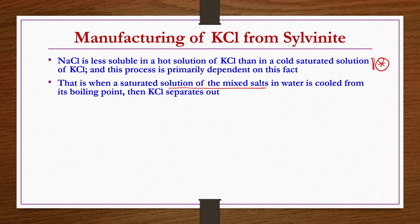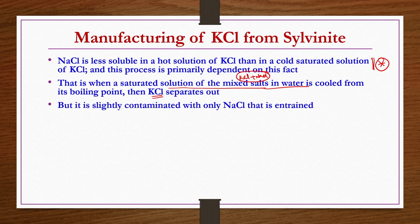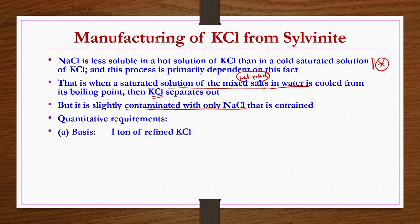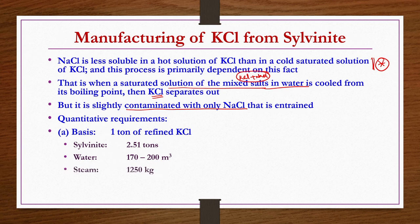When a saturated solution of mixed salts - KCl plus NaCl - is under boiling condition and then cooled from its boiling point, KCl will be separated out of the solution. However, this KCl will not be very pure - it will be slightly contaminated with NaCl. For the quantitative requirements of this process, to produce 1 ton of refined KCl you need: 2.51 tons of sylvanite, 170 to 200 cubic meters of water, 1250 kg of steam, and 180 mega joules of electricity.